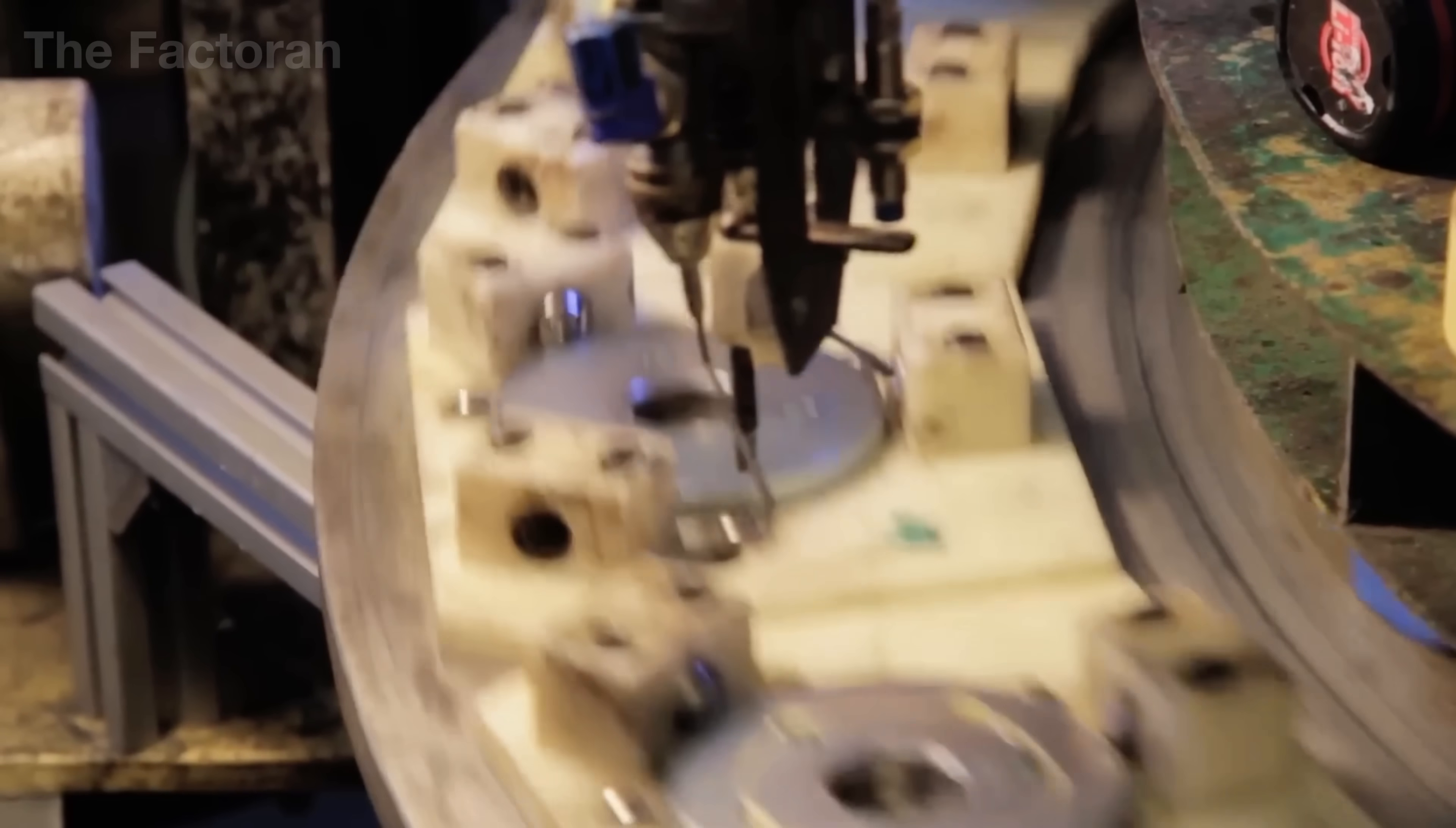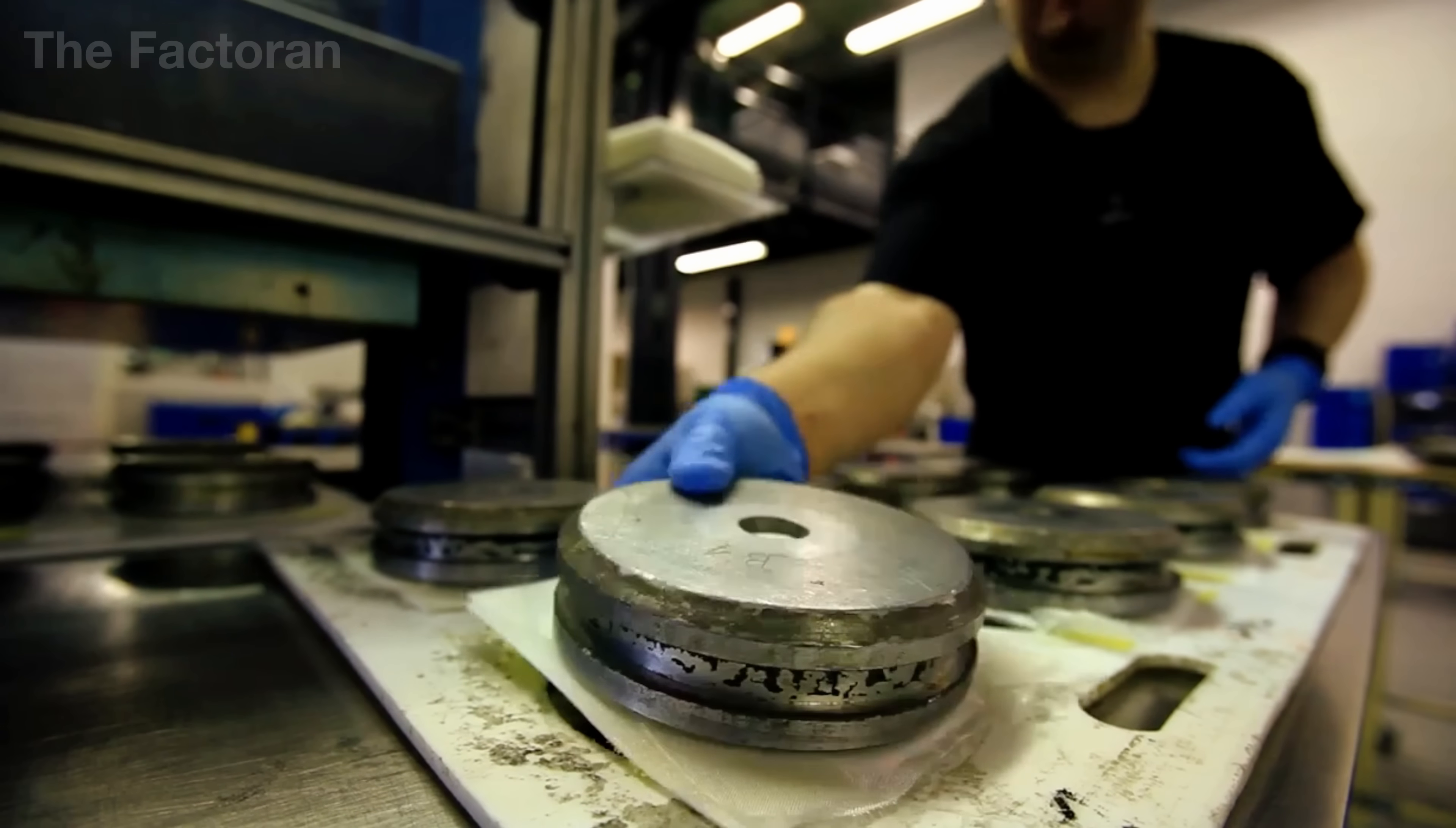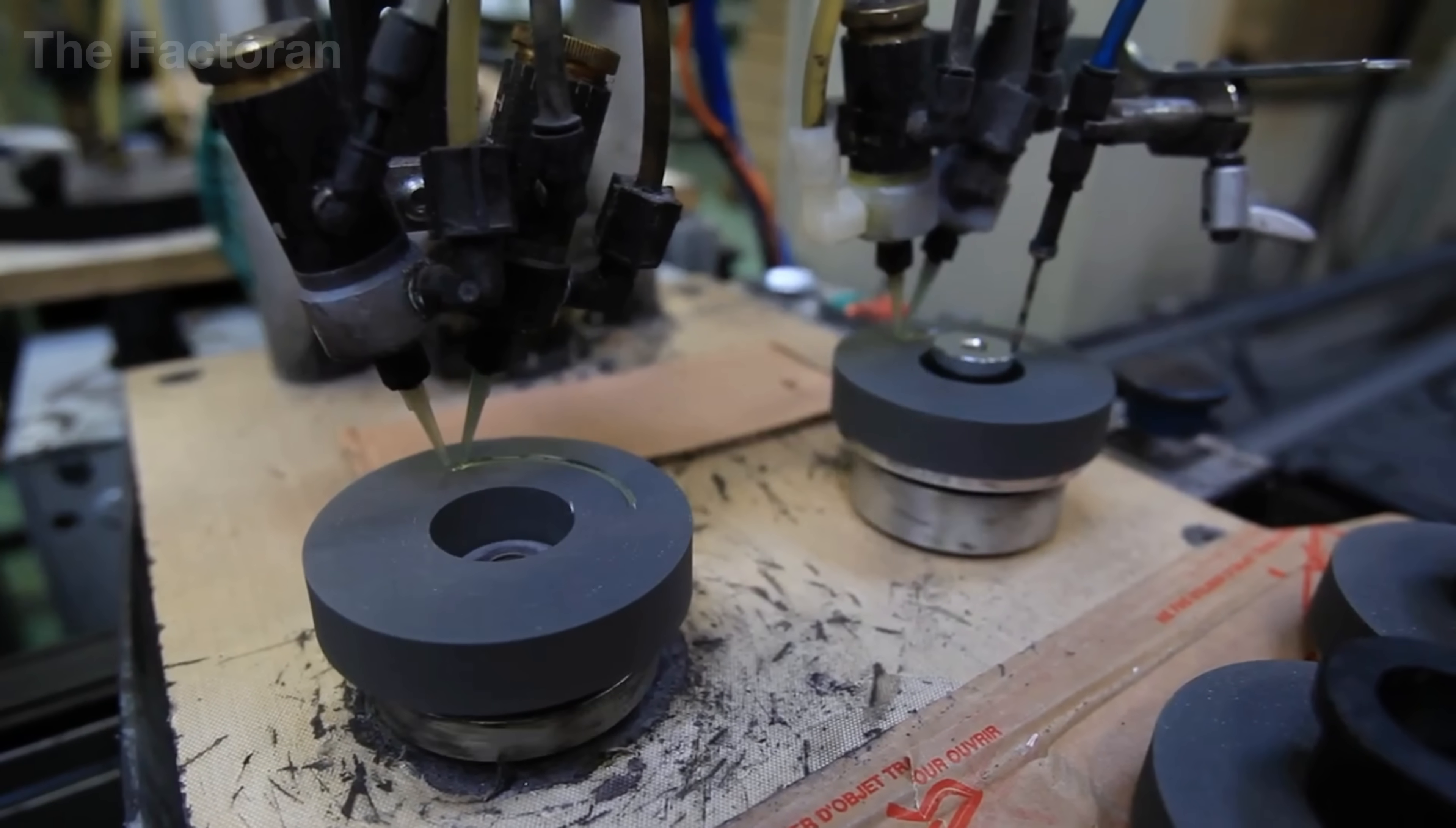Once cooled, each blank is transferred to precision machining stations, where it is milled into its final cylindrical or ring form with exact dimensions required for speaker assembly.